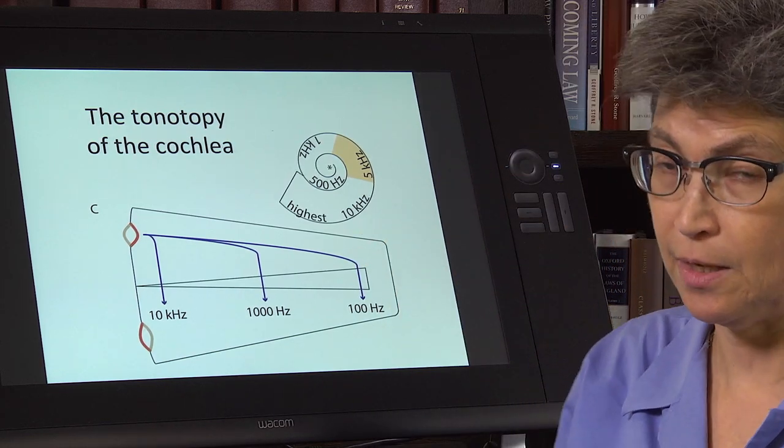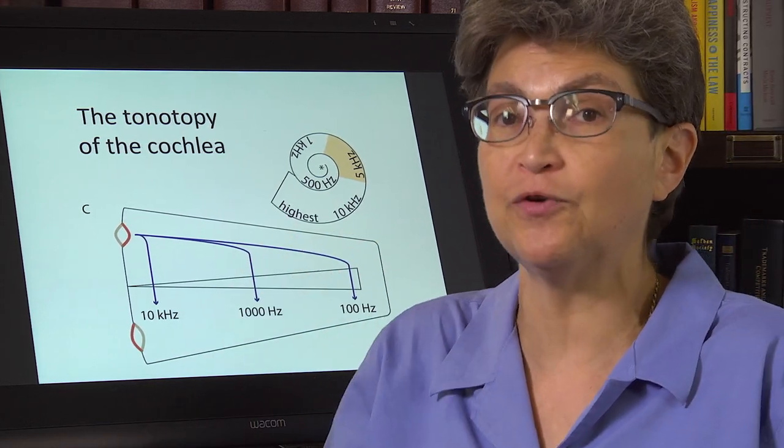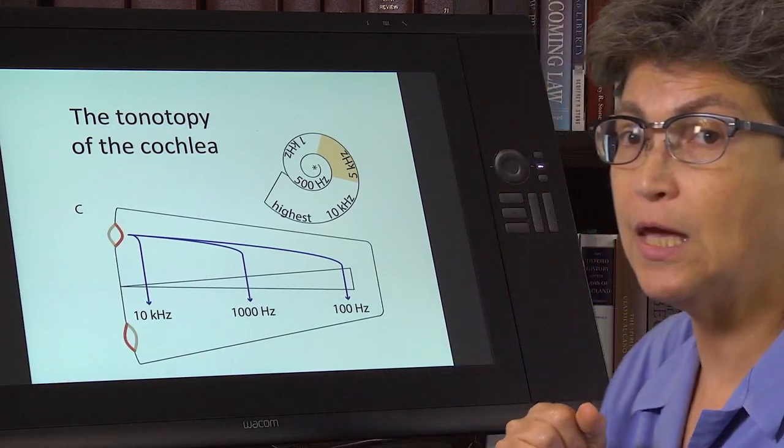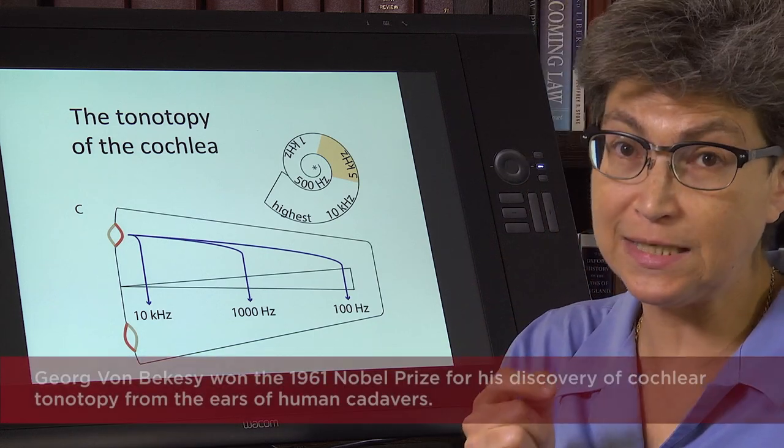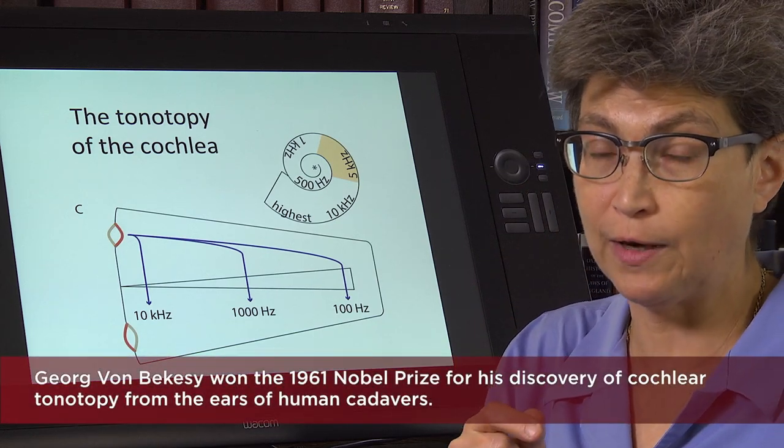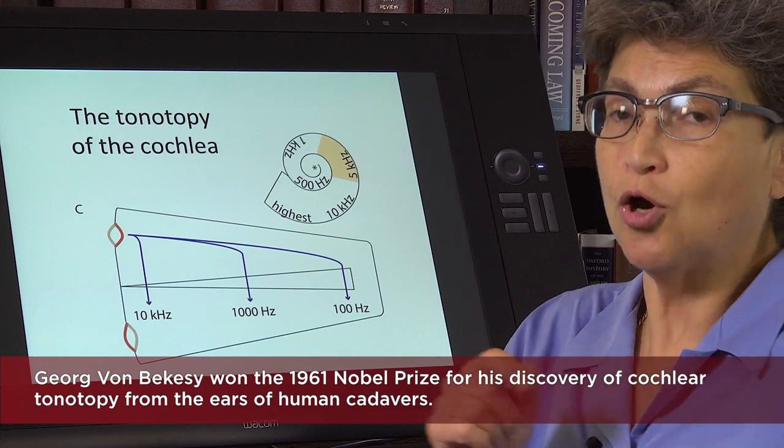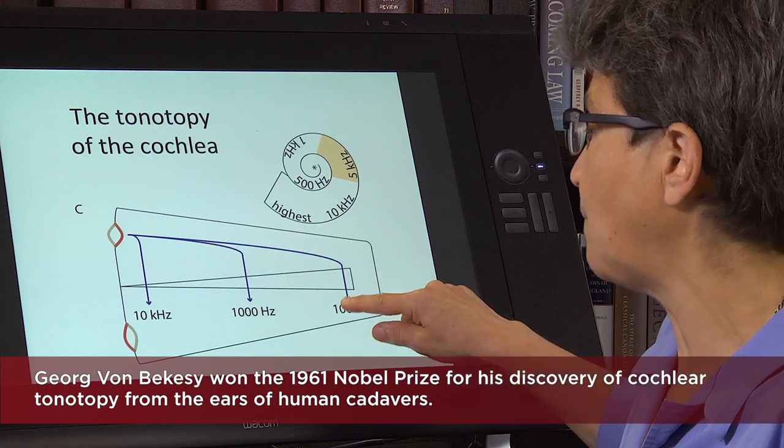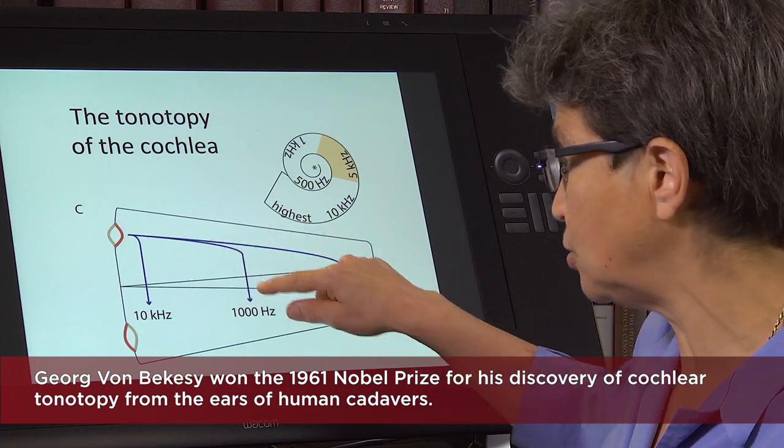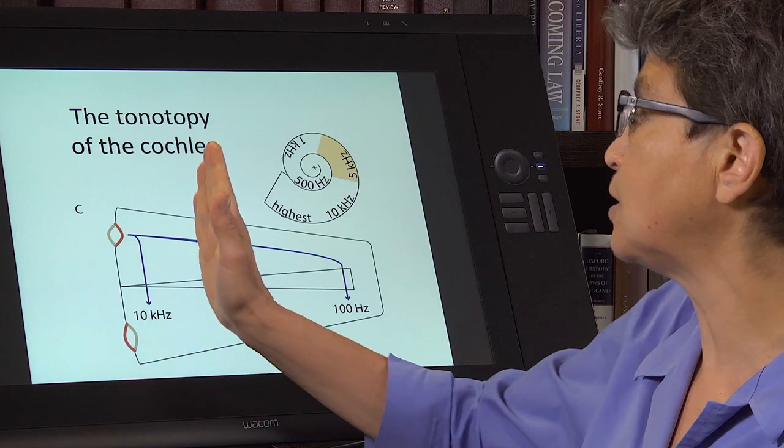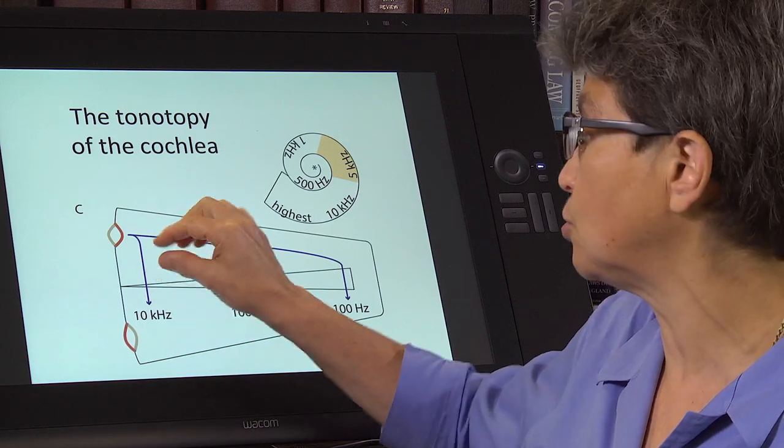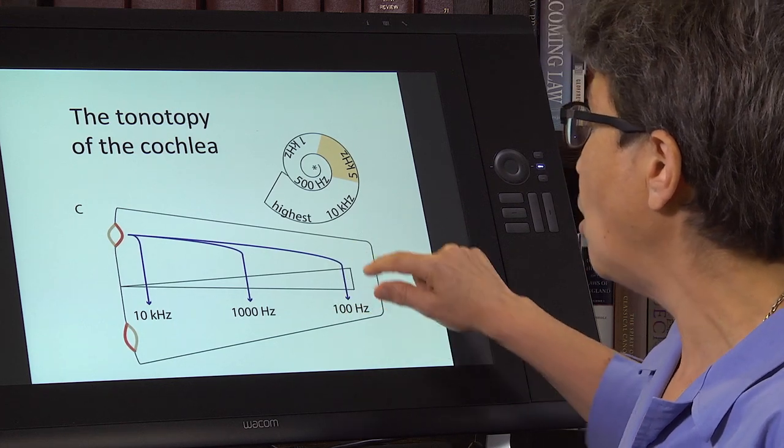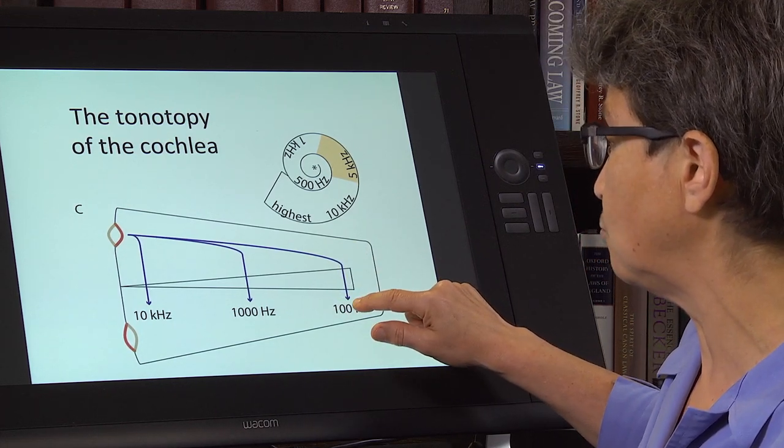This is the tonotopy, the mapping of different frequencies, tones, along the length of the cochlea. It was discovered by von Békésy, who got the Nobel Prize for it. And what he discovered using cochlea from cadavers was that sound was distributed in a tonotopic method across the length of the cochlea. So the highest frequency sounds are distributed to the base of the cochlea, and then the lowest frequency sounds are distributed to the apex of the cochlea.